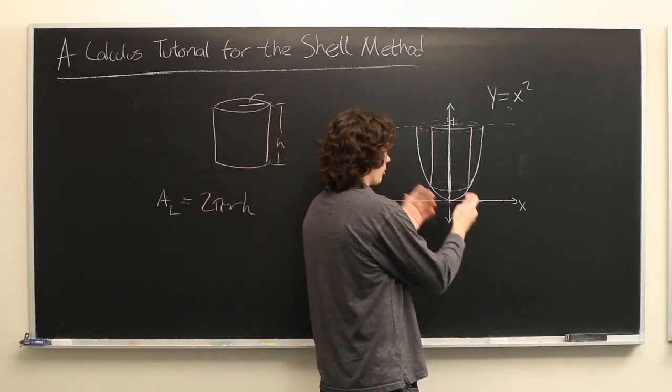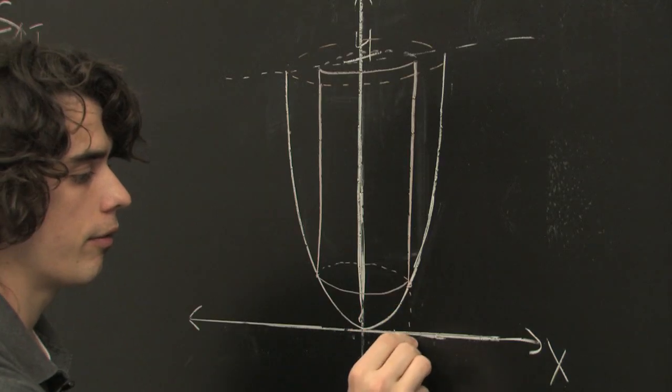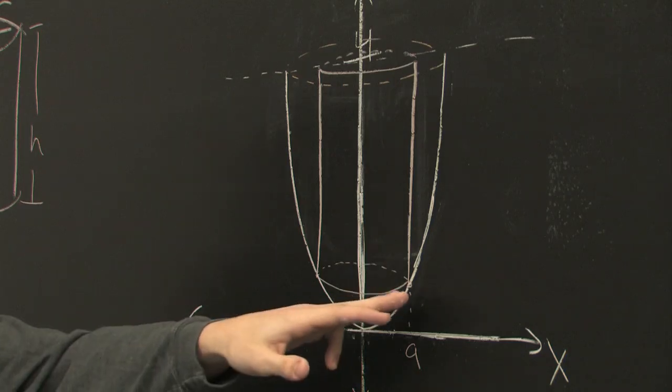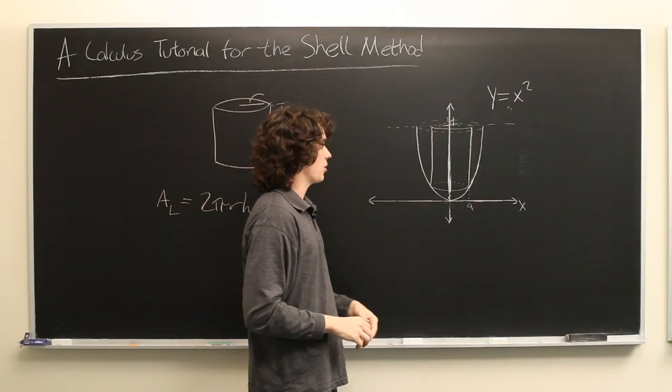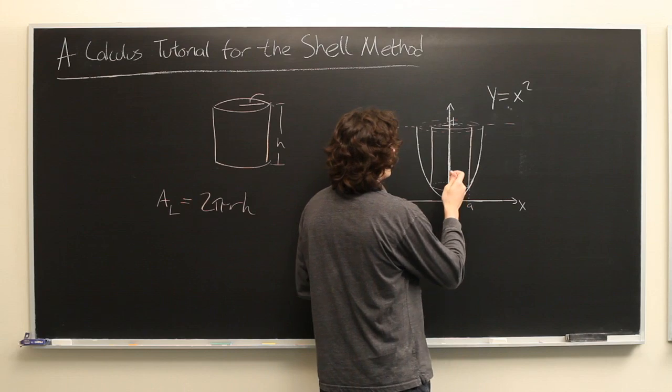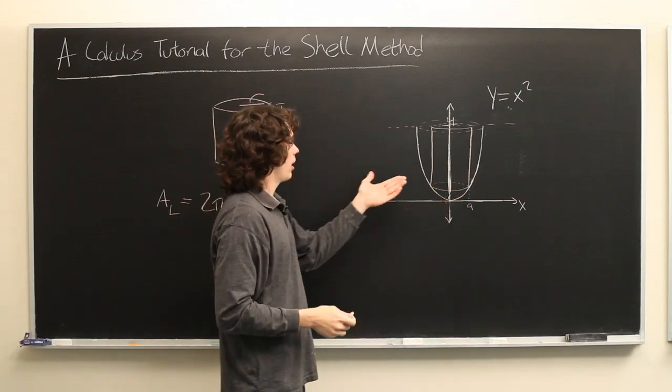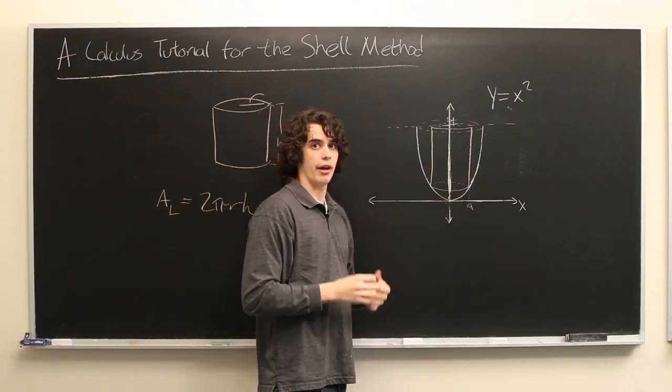Let's take a look at this arbitrary shell, which has one of its corners, so to speak, at x equals a. What is the A_L, or area of the lateral face, of this shell?